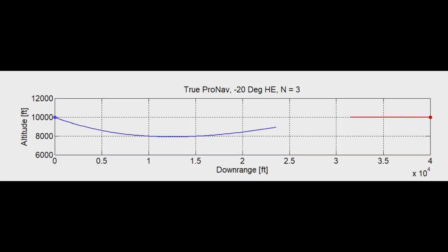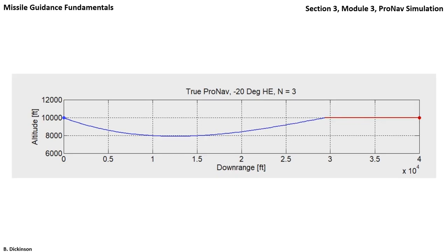This is altitude versus downrange for the pursuer in blue and target in red. The heading error causes the pursuer to drop 2,000 feet below the target before the true ProNav acceleration commands correct the course to cause collision.